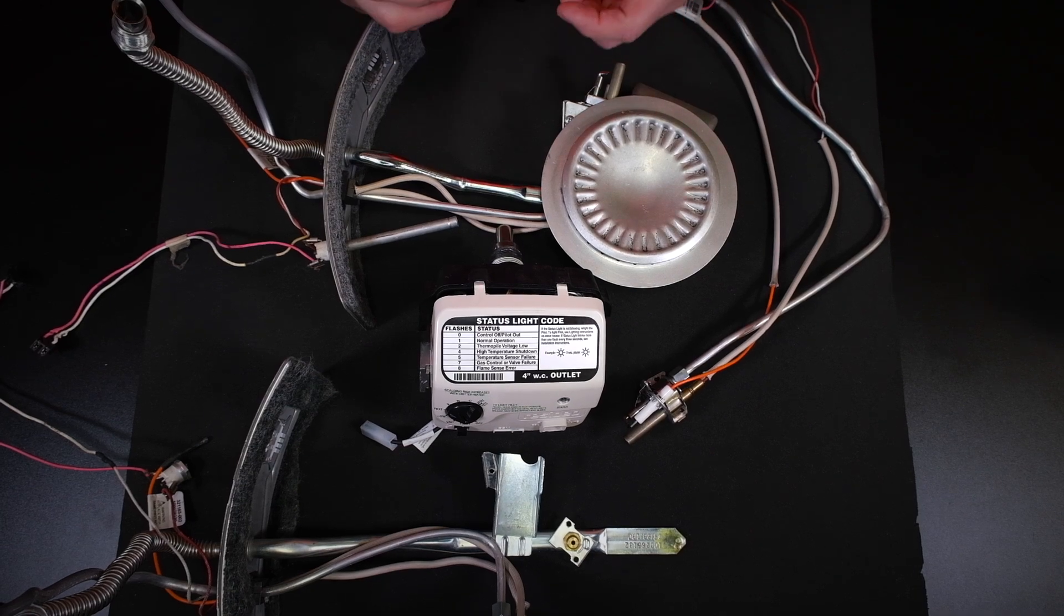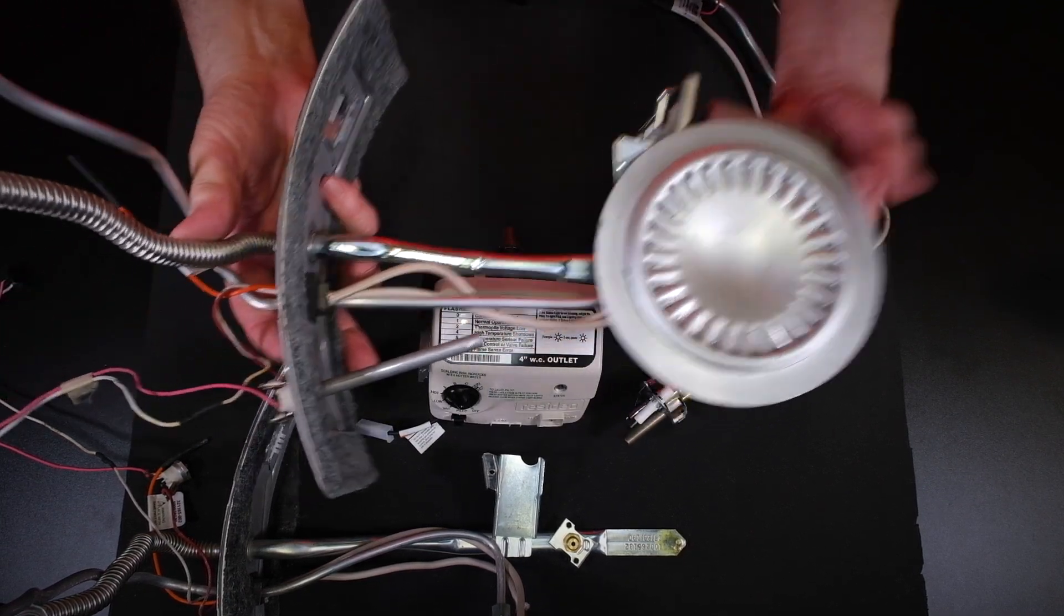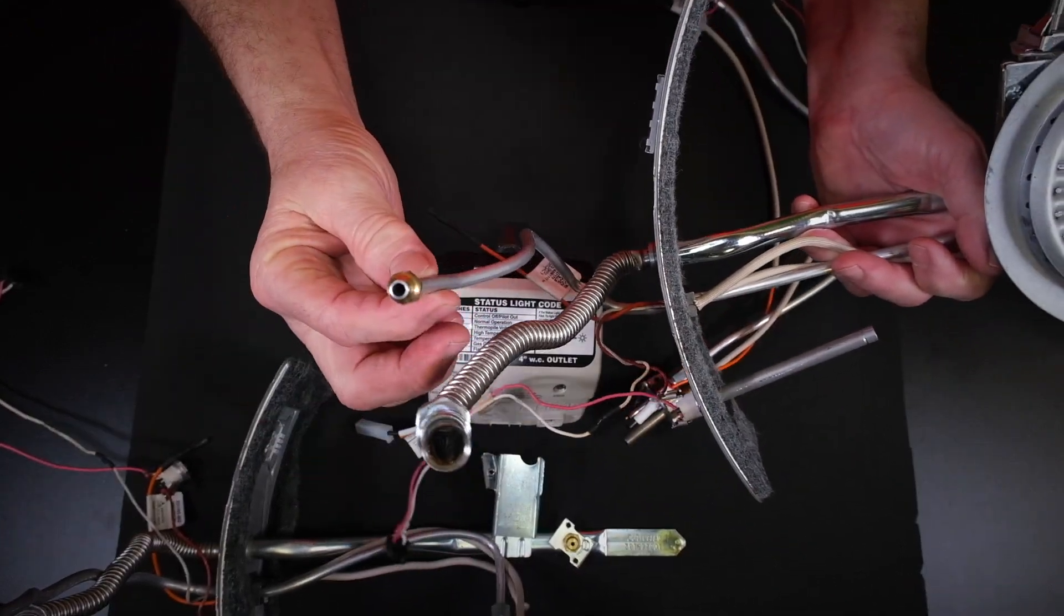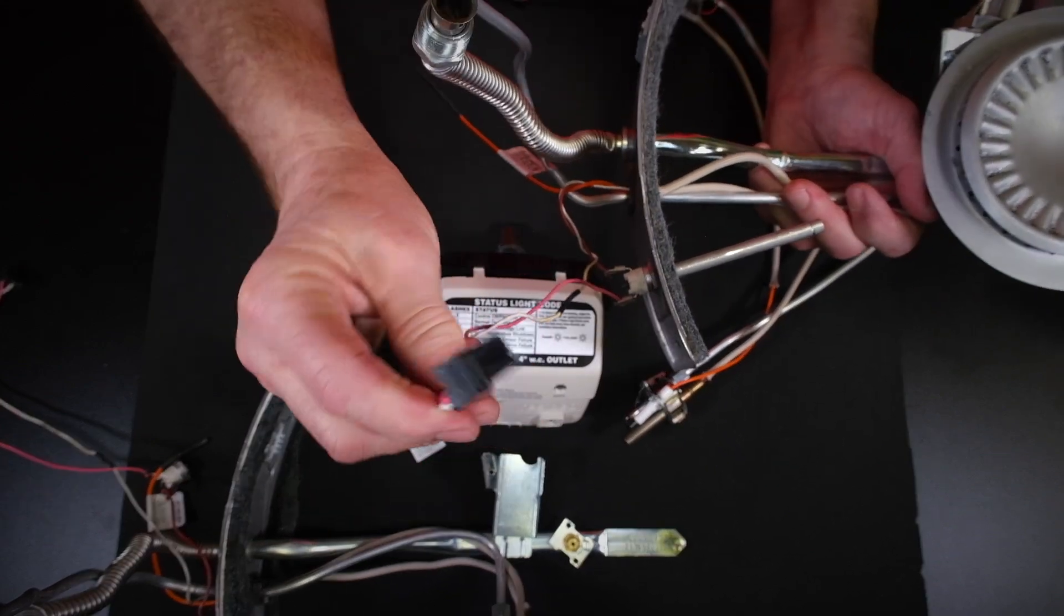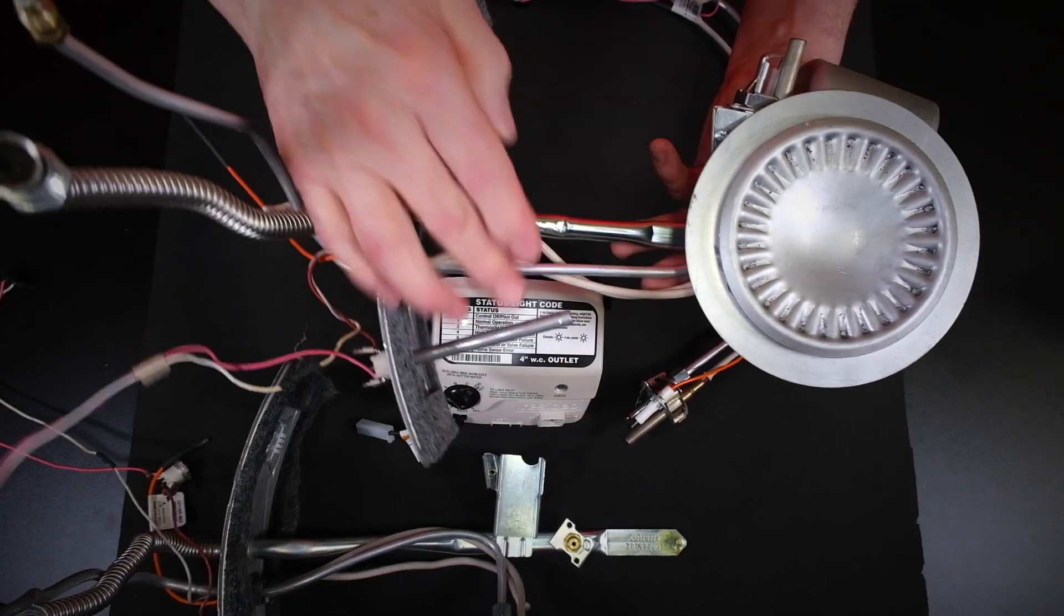All right, let's talk about the burner assembly. As I said, the gas burner assembly is connected to your gas control valve. These two pipes right here—this is your burner and this is your pilot light. These two connect up to your gas control valve. These wires right here are the ones that connect to your thermopile and also your flame rod.